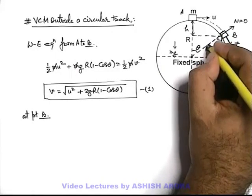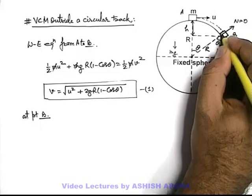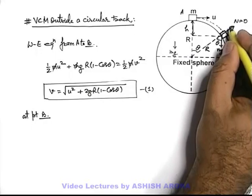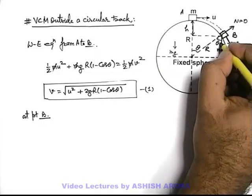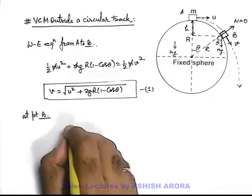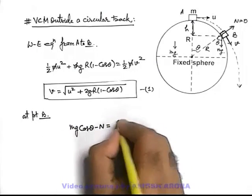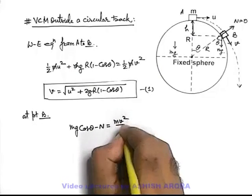So if this angle is theta, in radially inward direction it will be experiencing a component of its weight that is mg cos theta, if N it is experiencing in outward direction. We can write at this position: